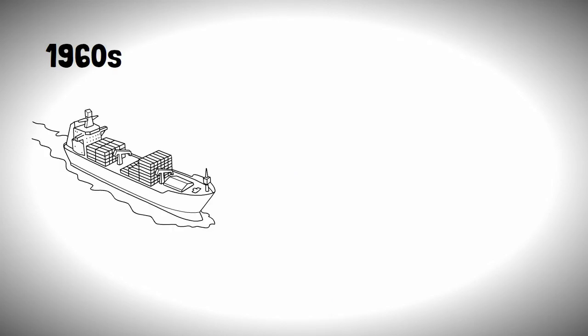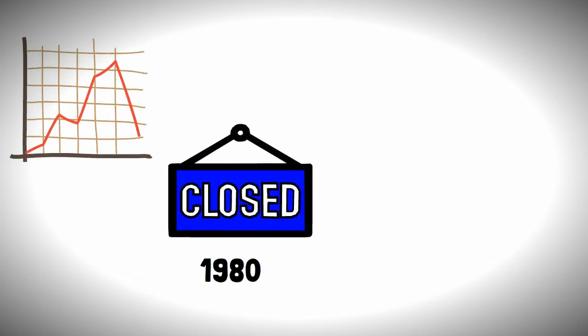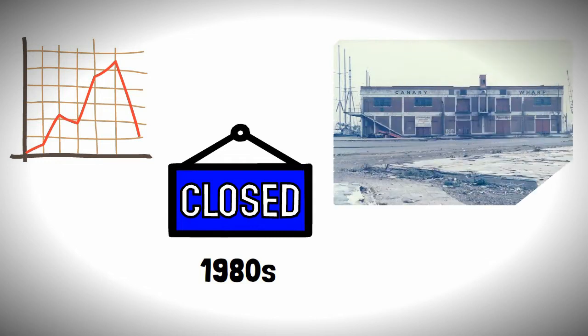Moving into the 1960s, shipping started to become containerized, meaning the docks would migrate further down the Thames where it was better suited. This resulted in the decline of the docks on the Isle of Dogs to the point where they were all closed down by the 1980s, becoming an industrial wasteland.